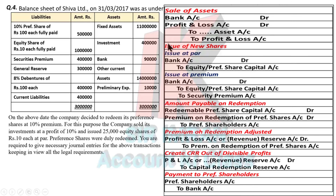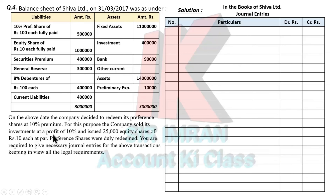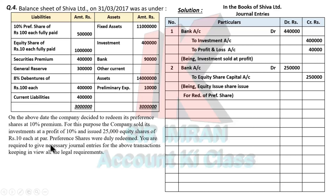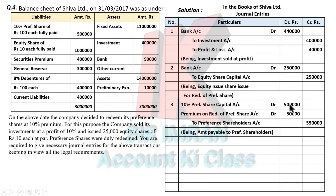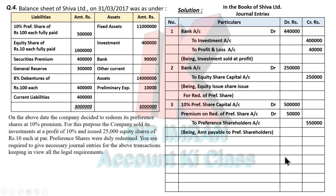Now let's pass all entries. First, investment sold: Bank Account Dr. To Investment ₹4,40,000 (₹4 lakh cost + ₹40,000 profit to P&L). Second, new equity share issue: Bank Dr. To Equity Share Capital ₹2,50,000 (25,000 shares × ₹10). Third, redemption entry: Preference Share Capital Dr. ₹5,00,000 and Premium on Redemption Dr. ₹50,000 (5,000 shares × ₹10 = ₹50,000) — credit to Preference Shareholders Account ₹5,50,000.